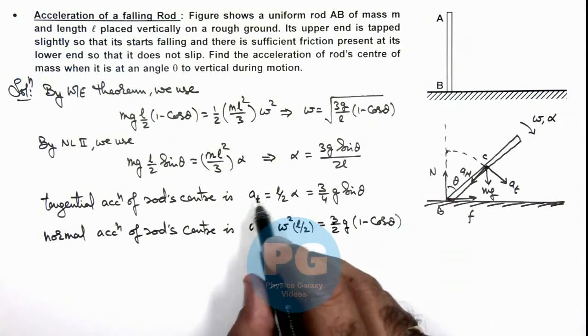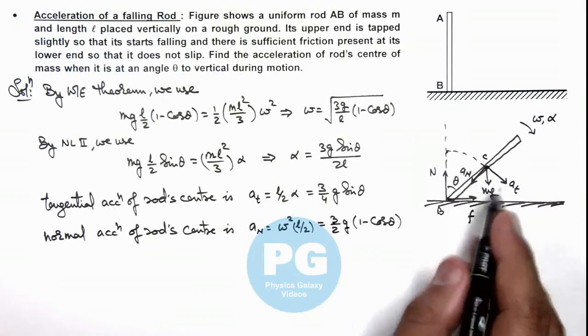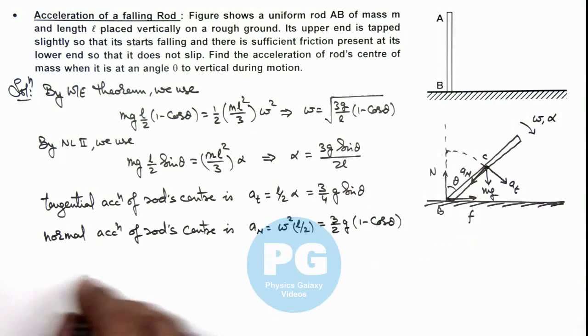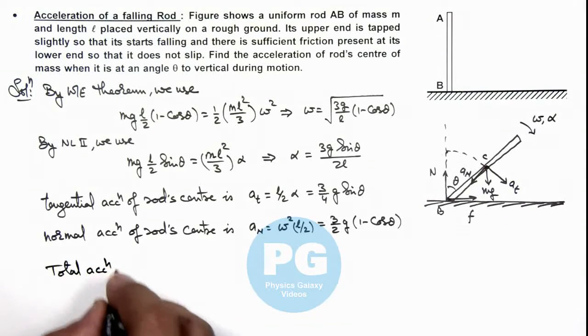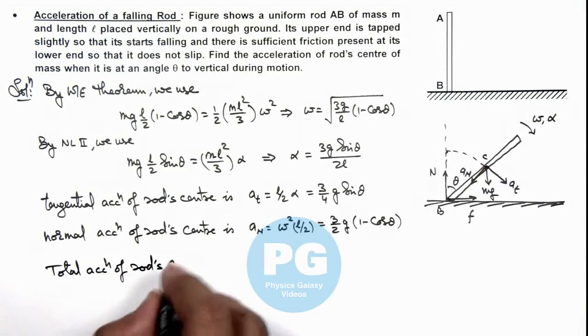As we have got the tangential and normal acceleration of the center, we can write the total acceleration of the rod's center.